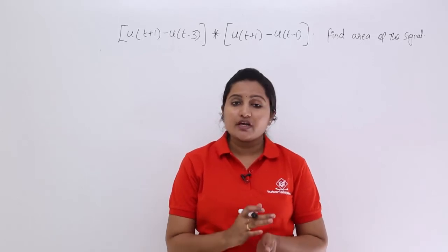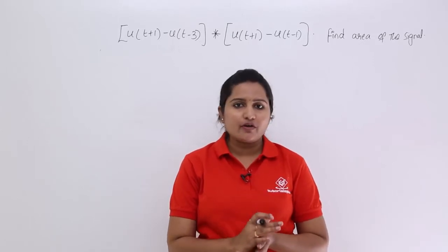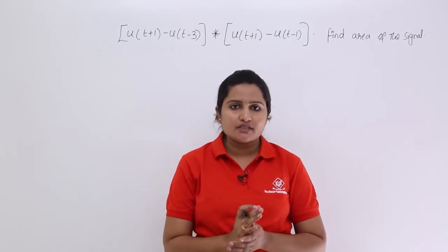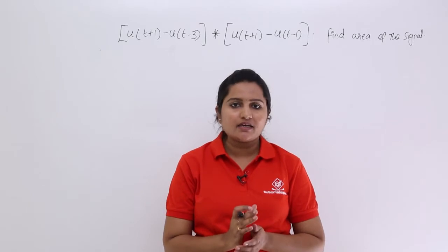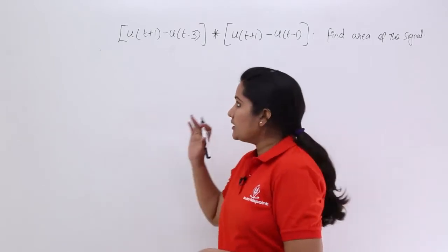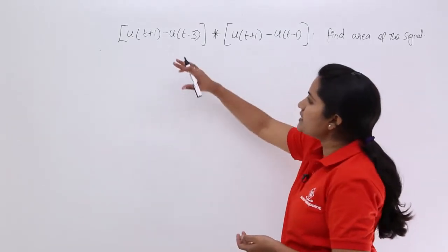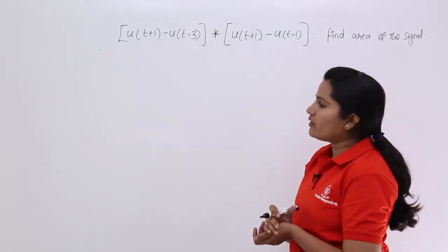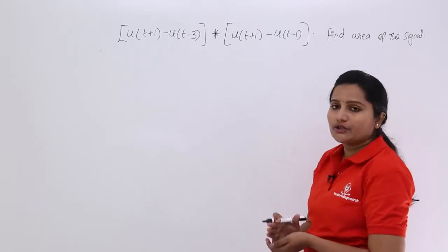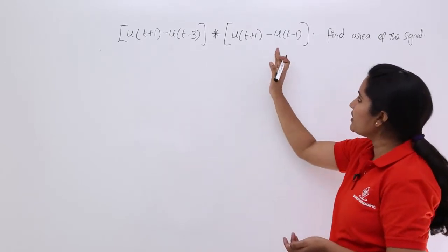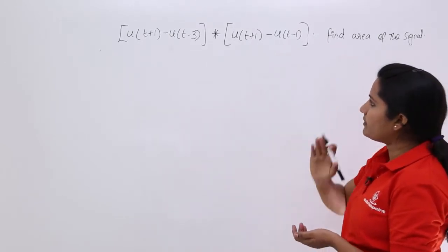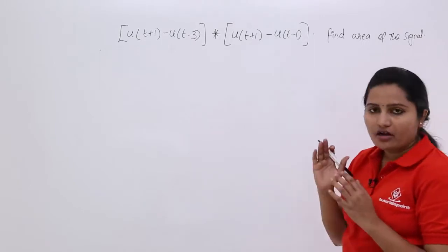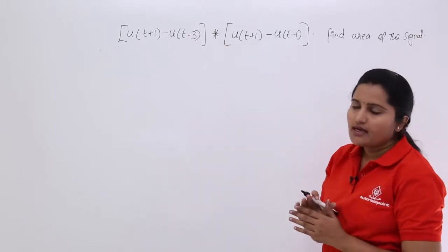In this video, we are asked to find the convolution of two unit steps and the area of the resultant signal. The given problem is u(t+1) minus u(t-3), convolution with u(t+1) minus u(t-1). Find the area of the resultant signal.